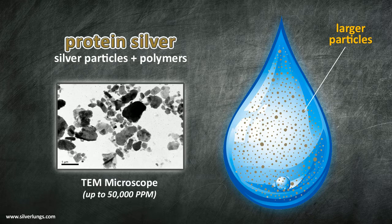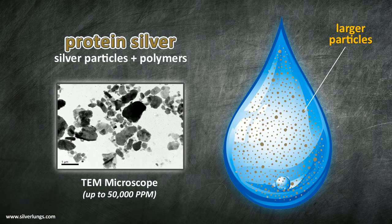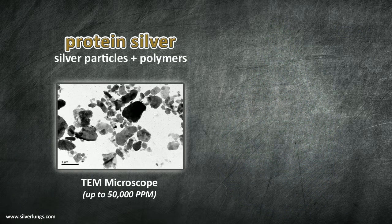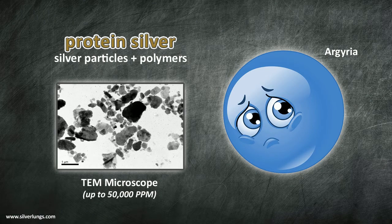It should also be noted that protein based silver solutions have always been at the top of the list for causing a permanent discoloration of the skin called argyria. While argyria is biologically harmless it is a profound change in the color of skin tissues which is hard to overlook and in most cases impossible to hide.